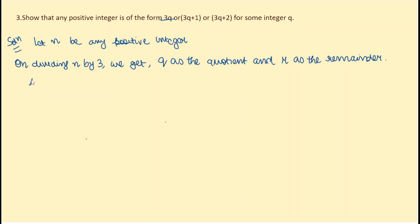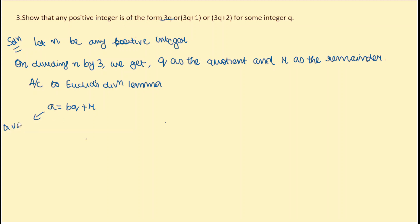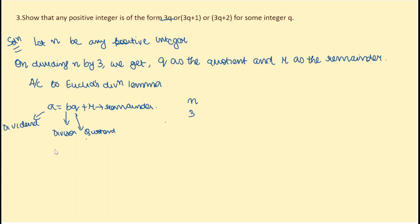By Euclid's Division Lemma, we can write n = 3q + r, where n is the dividend, 3 is the divisor, q is the quotient, and r is the remainder. The possible values of r are 0, 1, and 2, since r must be 0 or less than the divisor 3.